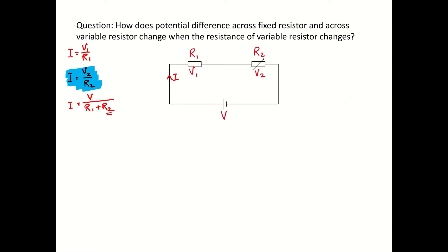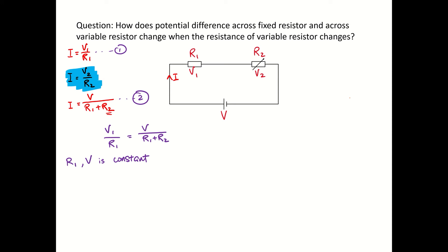From equations one and two we can express: V1 over R1 equals V over R1 plus R2. We know that the EMF of the battery is constant, so V is constant. We also know R1 is a fixed resistor, and therefore R1 is also constant.